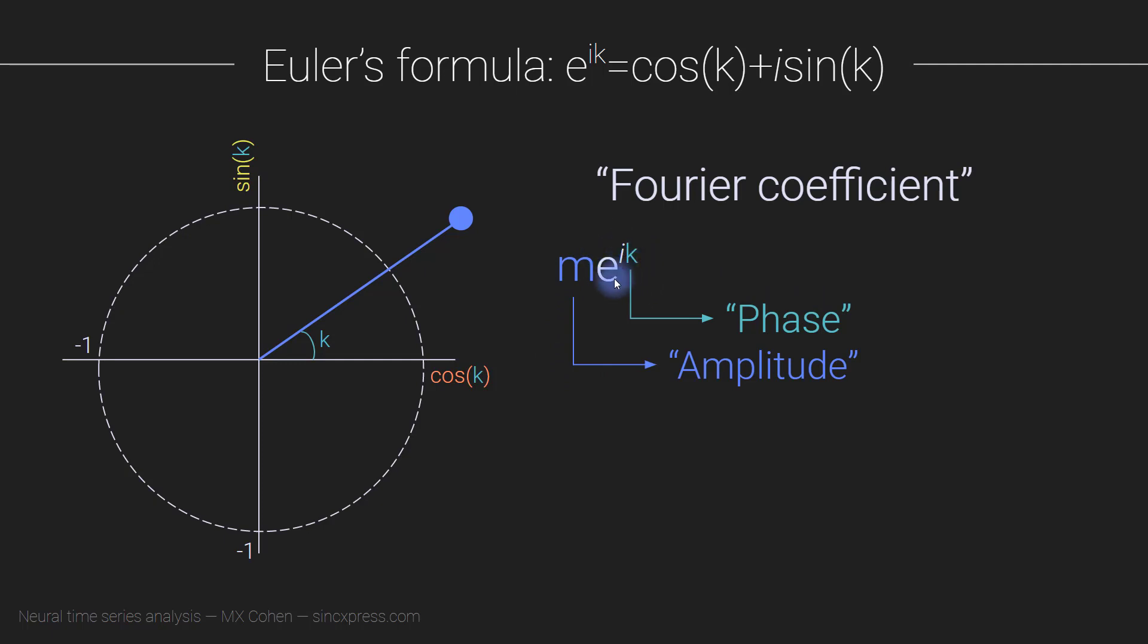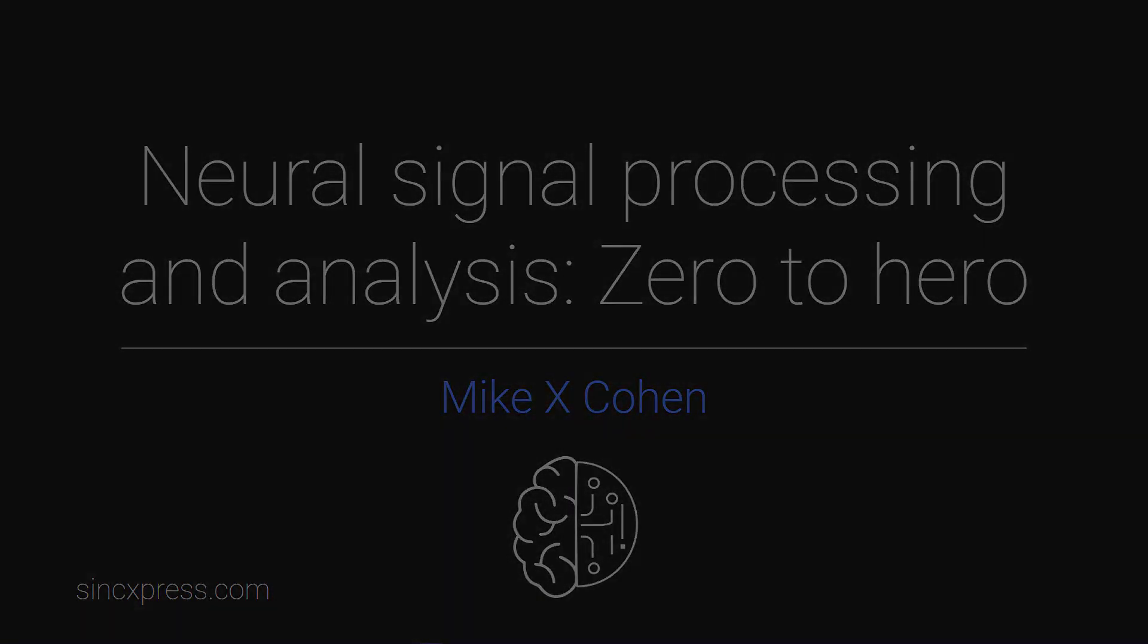So once you have a bunch of these a series of these Fourier coefficients for lots of different frequencies, then all we have to do is separate out the m's here, and that gives us the amplitude spectrum. And then you can also square this to get the power spectrum. And we can pull out these k's, and that gives us the phase spectrum.